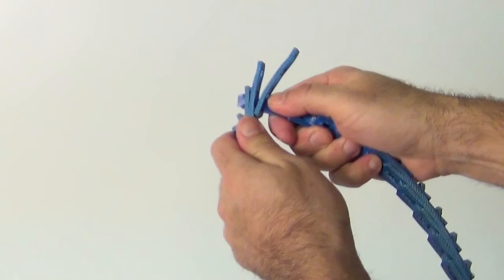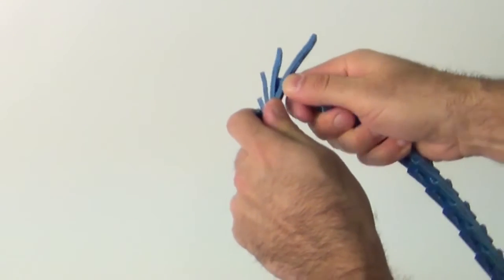Rotate last tab 90 degrees parallel with the slot. Pull belt end through three links.